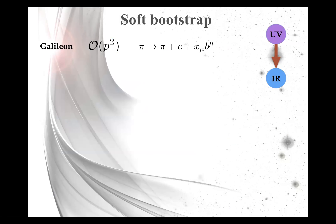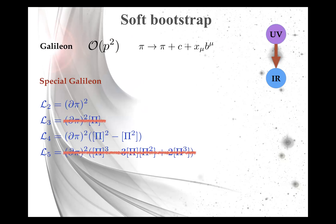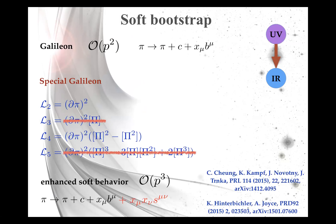The special Galileon is the subclass where L3 and L5 interactions are absent and L2 and L4 parameters are combined in a specific way, giving enhanced soft behavior with an enhanced nonlinear symmetry. This illustrates how powerful soft behavior analysis is for classifying EFTs and discovering new symmetries.